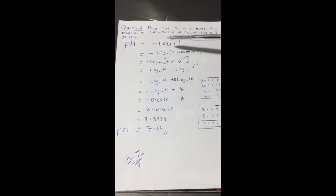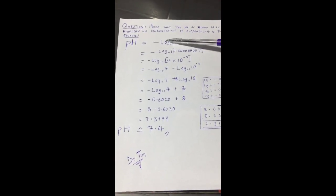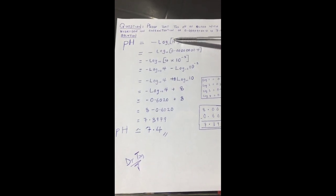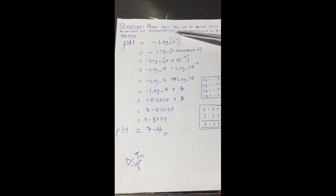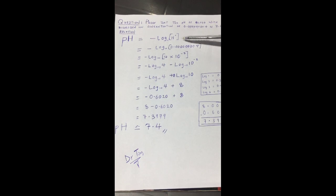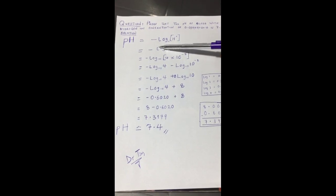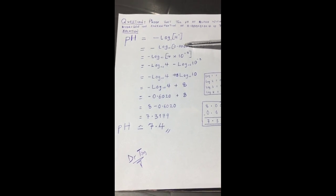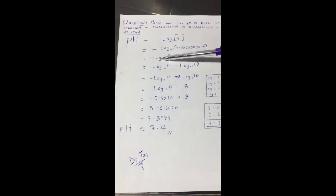Remember your formula for pH is negative log of hydrogen ion concentration. They've given us the hydrogen ion concentration as 0.00000004, so we just replace the hydrogen ion concentration with the figure they've given you.